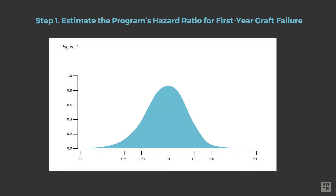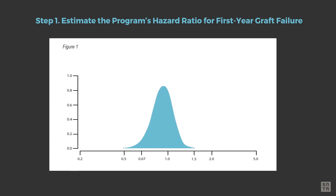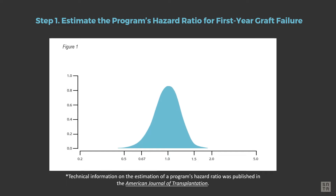Estimating outcomes always involves some degree of uncertainty. Therefore, we calculate a bell-shaped curve, like the one shown in Figure 1, that describes the likely location of the program's hazard ratio. A narrower bell curve indicates more certainty about the estimate, while a wider bell curve indicates less certainty.